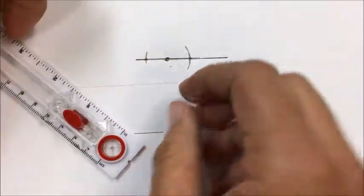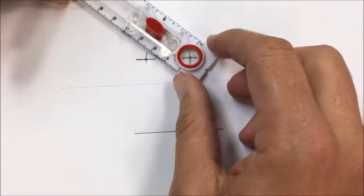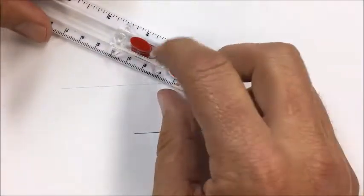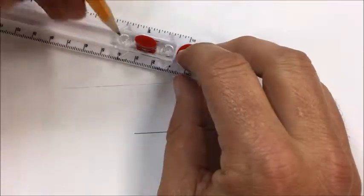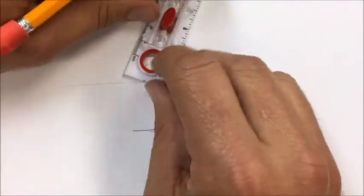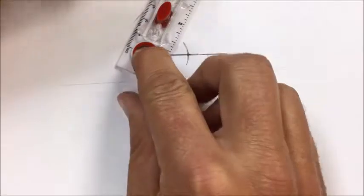So I'm going to do a perpendicular bisector through it. I'm going to use something that's a little longer than this because I wanted to go past it. I'm going to arc from there, I'm going to arc from there. Oops, sorry.